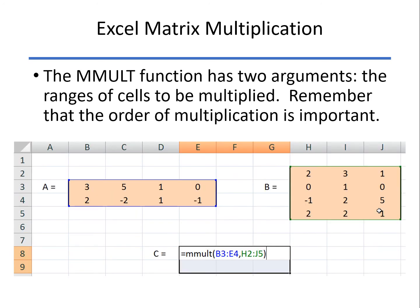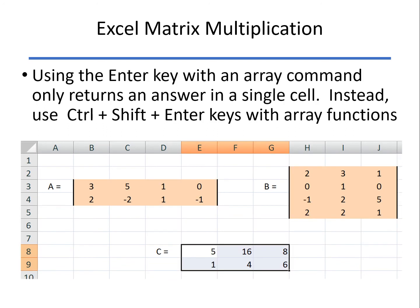For multiplication, it's the mmult function. Remember that the order of multiplication is important, so I have to identify matrix A first, comma, then matrix B. If we just hit enter, we only get the first term, the 1,1 term. So, always remember you have to hit control, shift, enter with array functions, and that fills out the entire two by three array that is the product of A and B.